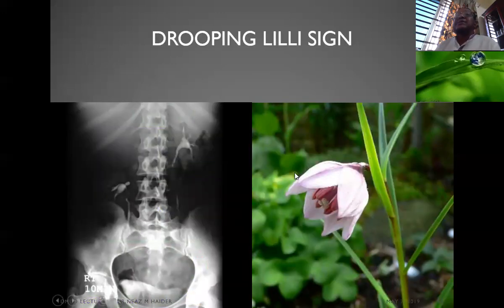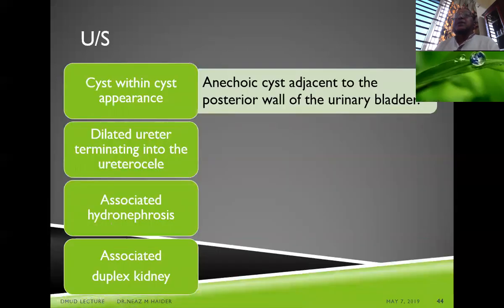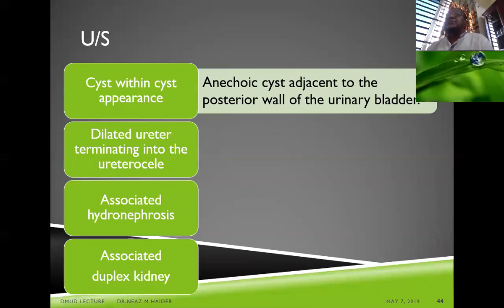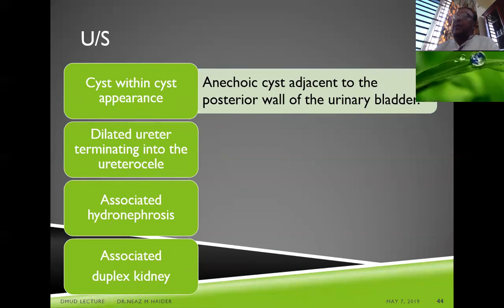The dropping lily sign is associated with duplex kidney and ureterocele — the lower moiety droops downward due to the non-functioning obstructed upper moiety. On ultrasound, a cyst-within-a-cyst appearance is seen, with the dilated ureter draining into the ureterocele. Associated hydronephrosis and duplex kidney can be identified by detecting a bifid renal sinus.